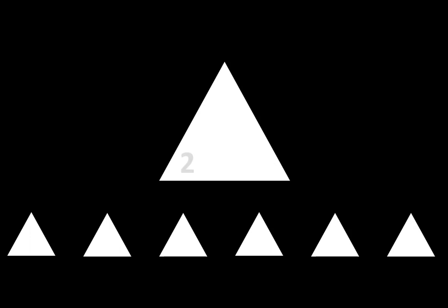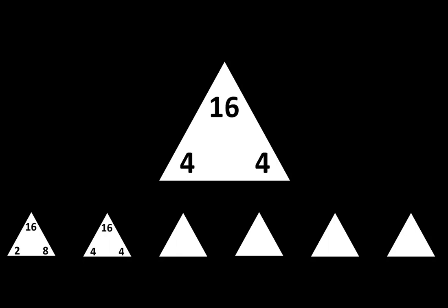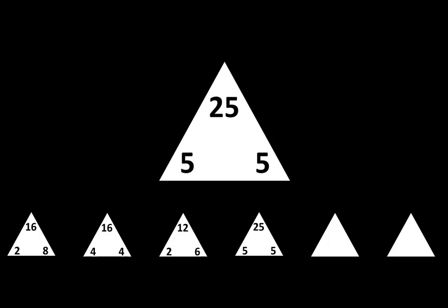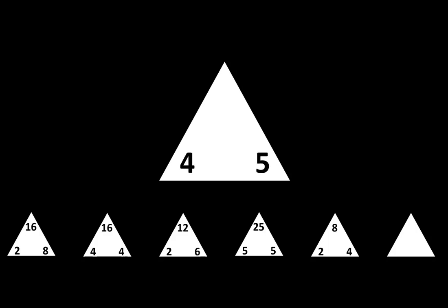Let's move to the next row. The next one is 2 times 8 is equal to 16. The next one is 4 times 4 is equal to 16. The next one is 2 times 6 is equal to 12. The next one is 5 times 5 is equal to 25. The next one is 2 times 4 is equal to 8. The next one is 4 times 5 is equal to 20.